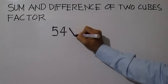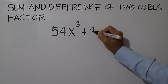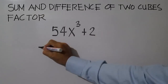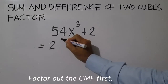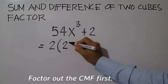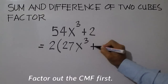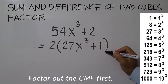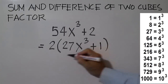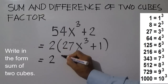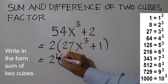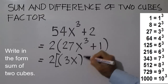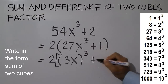Factor 54x cubed plus 2. This is not a perfect cube. Try finding the CMF or the common monomial factor, which is 2. 54 divided by 2 is 27x cubed; 2 divided by 2 is 1. This time you have a factor which is sum of two cubes. Write in the form sum of two cubes: 27x cubed is equal to 3x quantity cubed plus 1 cubed.